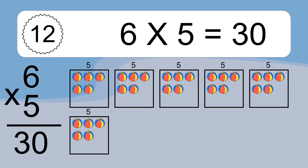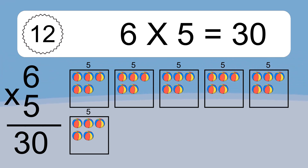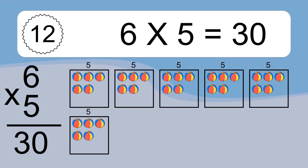6 times 5 equals what? 6 times 5 equals 30. We have 6 boxes, and each box has 5 colorful balls inside. If you count all the balls in all the boxes together, you will have 6 times 5 balls. This equals 30 balls.